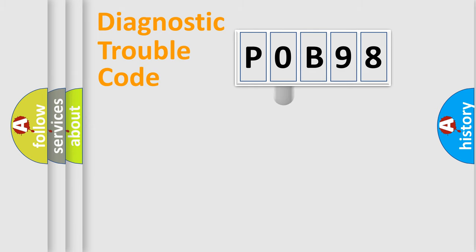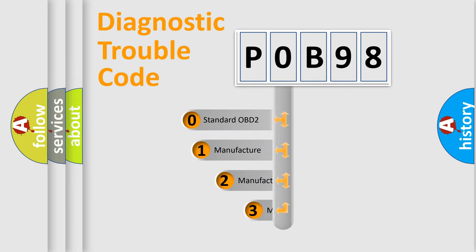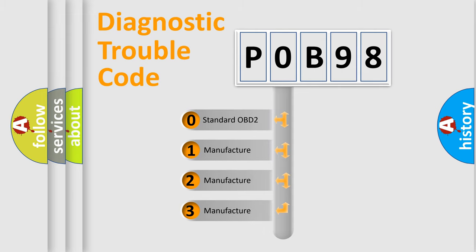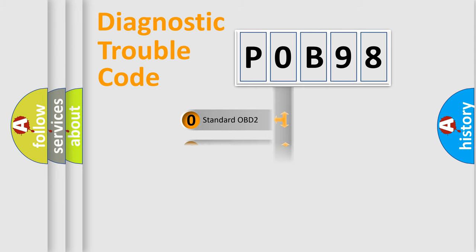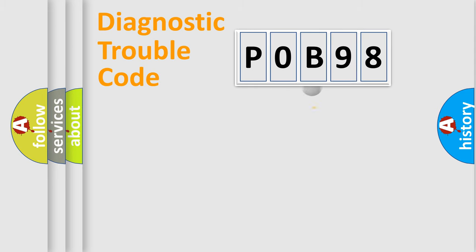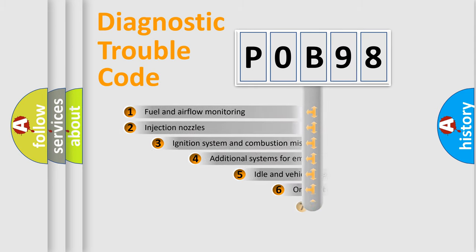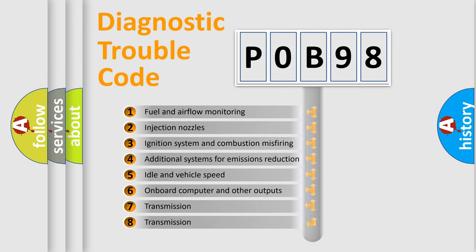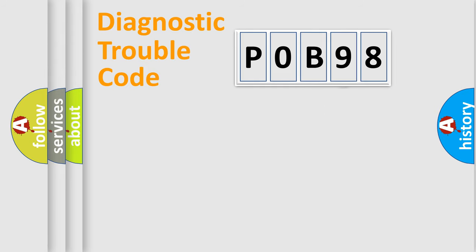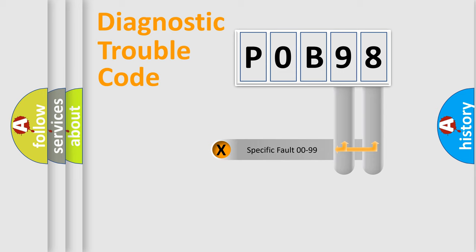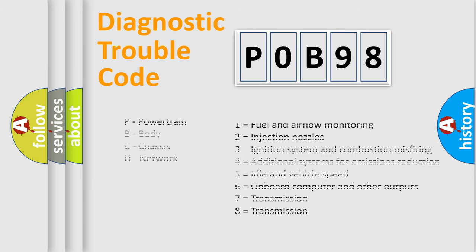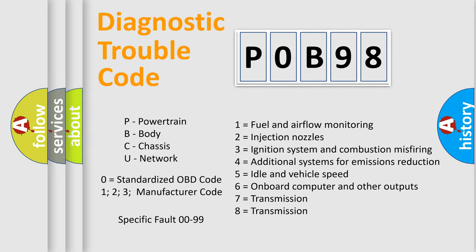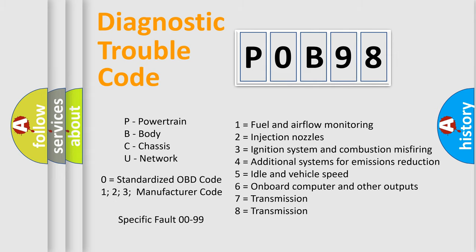This distribution is defined in the first character of the code. If the second character is expressed as zero, it is a standardized error. In the case of numbers 1, 2, or 3, it is a more manufacturer-specific expression of the error. The third character specifies a subset of errors. This distribution is valid only for the standardized DTC code, and only the last two characters define the specific fault of the group.